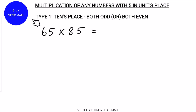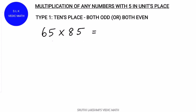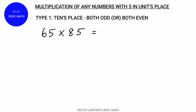Let's see Type 1: the 10's place digits are both odd or both even. Let's see an example: 65 into 85. 65's 10's place is even and 85's 10's place is also even, and both numbers end with 5.